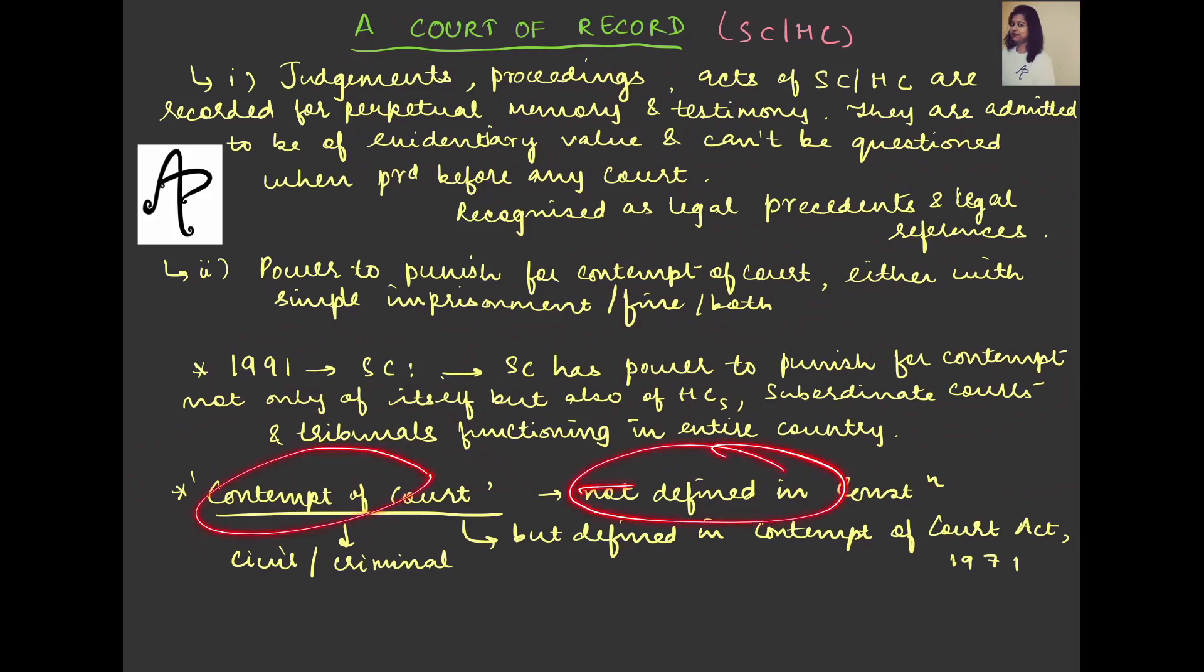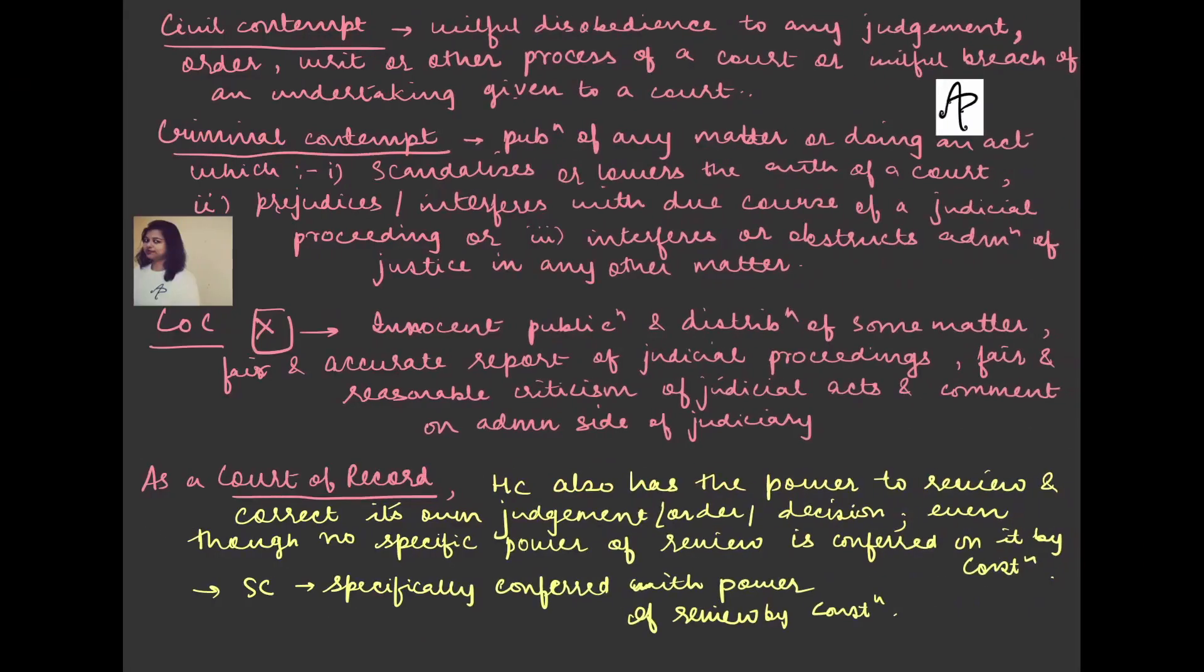This term contempt of court is defined in the Contempts of Court Act, 1971. It is primarily considered into two types: civil contempt and criminal contempt. Civil contempt would mean if you are willfully disobeying any of the judgment, order, writ, or any other process of the court. Or, you are willfully breaching any undertaking given to a court.